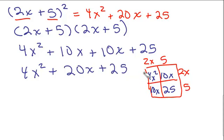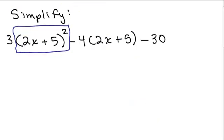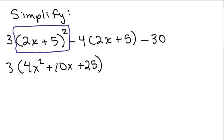And we see the like terms: the 4x squared, the 10x and the 10x combine to 20x, and the 25. So in any case, that's what 2x plus 5 squared is. So let's go back to our problem. Now we know what 2x plus 5 squared is — it's 4x squared plus 20x plus 25. That's up to you if you need to go and do that on scratch paper.